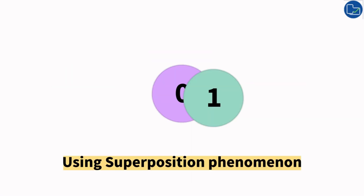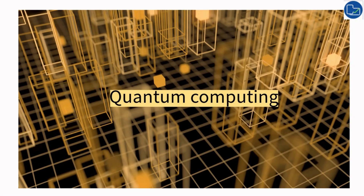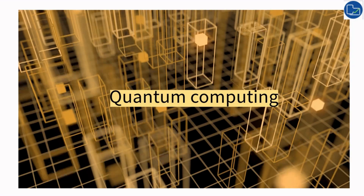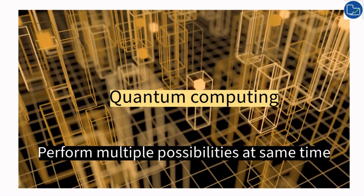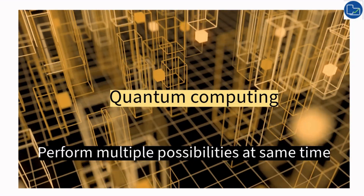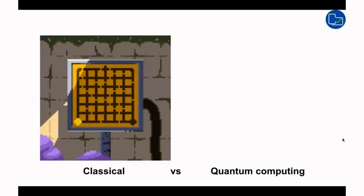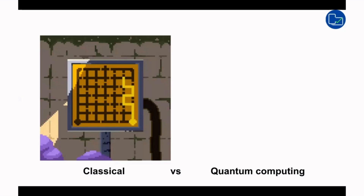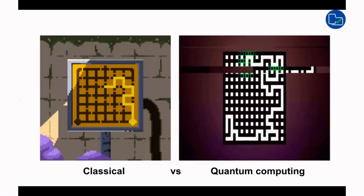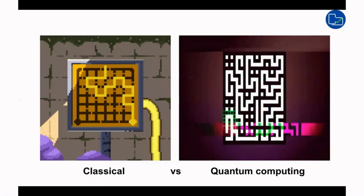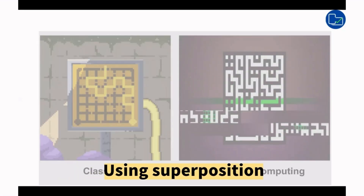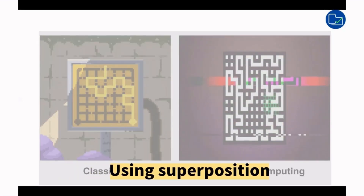Because of this superposition property, instead of solving problems one step at a time like traditional computers, quantum computers can perform many calculations simultaneously. For example, imagine trying to solve a maze. A regular computer would try one path at a time, testing if it works and then trying the next one. But a quantum computer can try all the paths at the same time — that's the power of superposition.